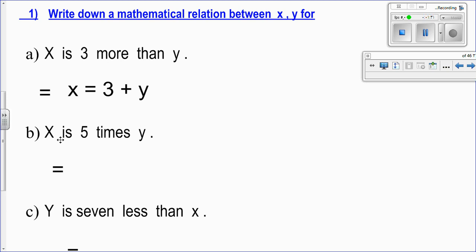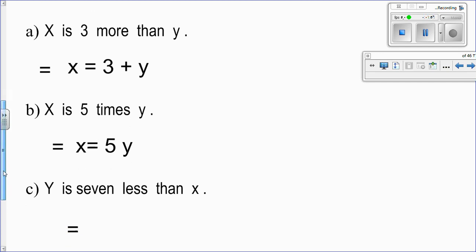Here, x is, x is meaning x equals 5 times y. You can write x equals 5 times y. Or you can write x equals 5y. The multiplication sign you can neglect it. And when you see 5y, you understand it's 5 times y. Question C.